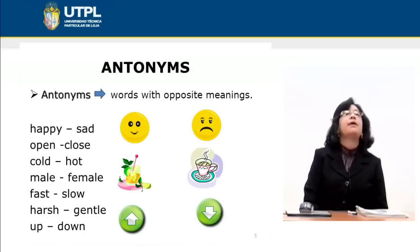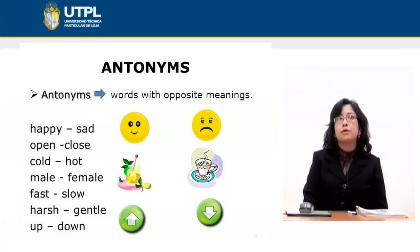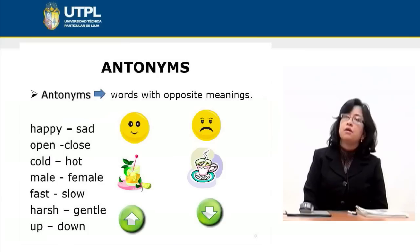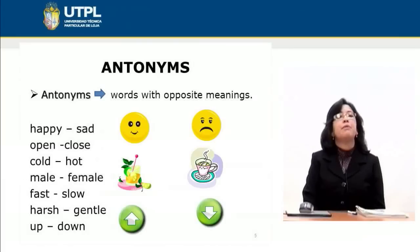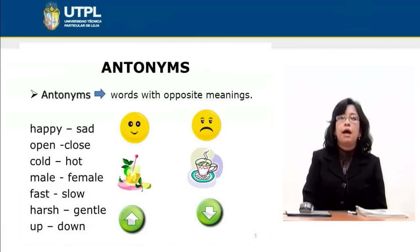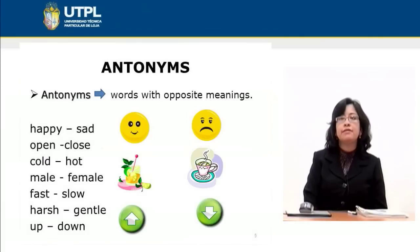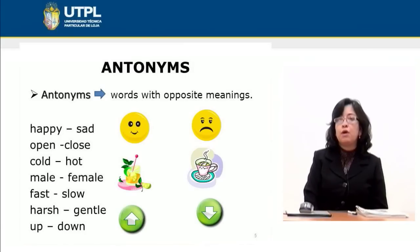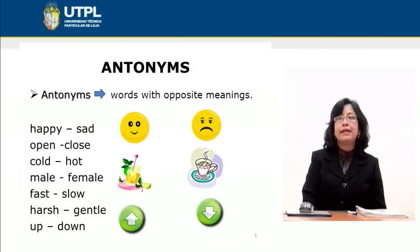Now regarding antonyms — antonyms are words which are opposites; they express different meanings. In the examples we have: happy and sad, open and close, cold and hot, male and female, fast and slow, harsh and gentle, up and down.